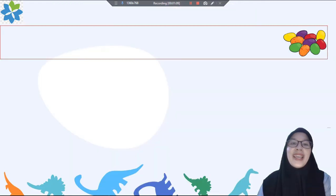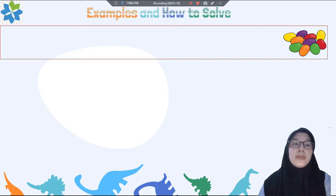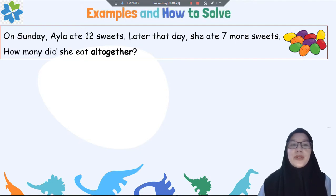Now let's go to the first example and I want to show you how to solve the problem. On Sunday, Ayla ate 12 sweets. Later that day, she ate 7 more sweets. How many did she eat altogether? Pada hari Minggu, Ayla makan dua belas permen. Hari berikutnya, ia memakan tujuh permen lagi. Ada berapakah permen yang sudah Ayla makan?